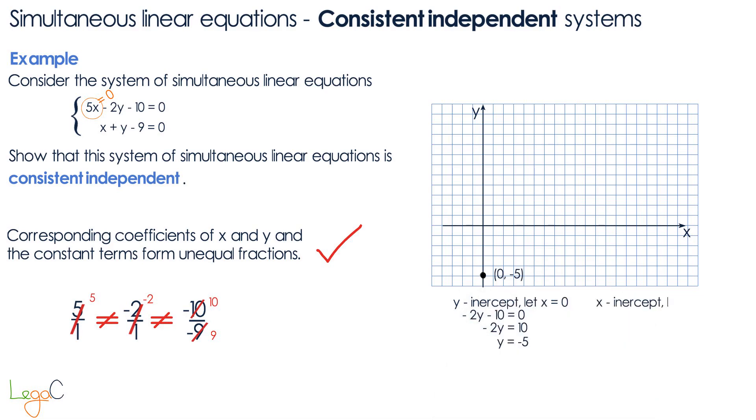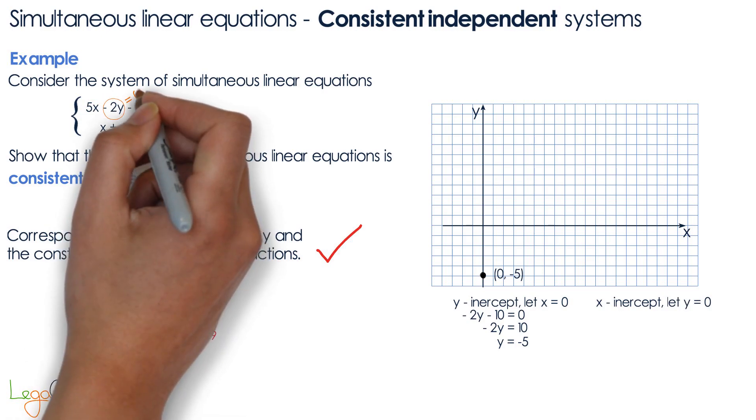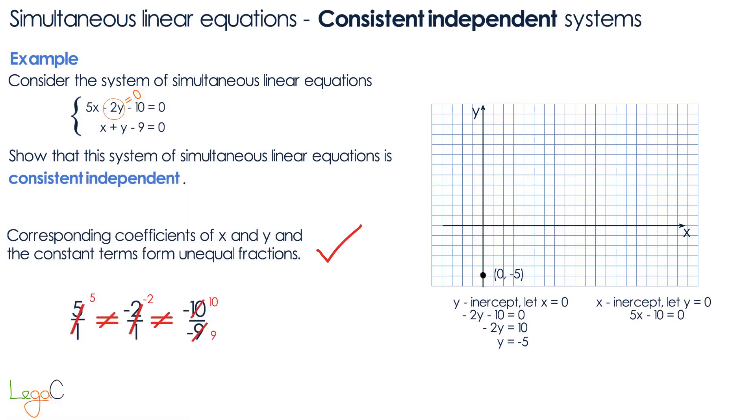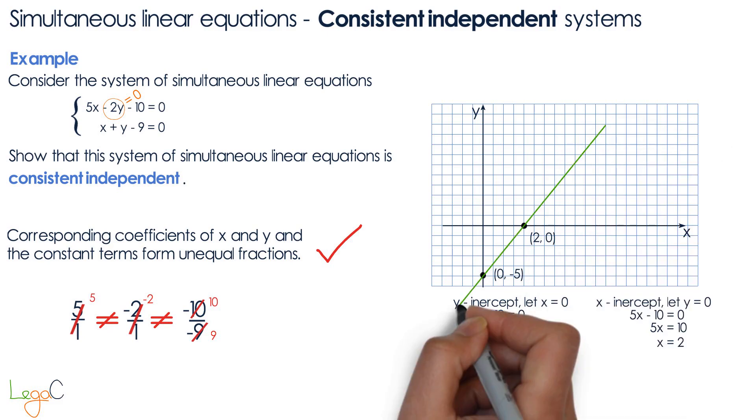Next we calculate the x-intercept by letting y equals 0 so negative 2y equals 0 so the equation becomes 5x minus 10 equals 0. We solve for x and x equals 2 so the x-intercept of this line is 2 and 0. We draw the line and we label it.